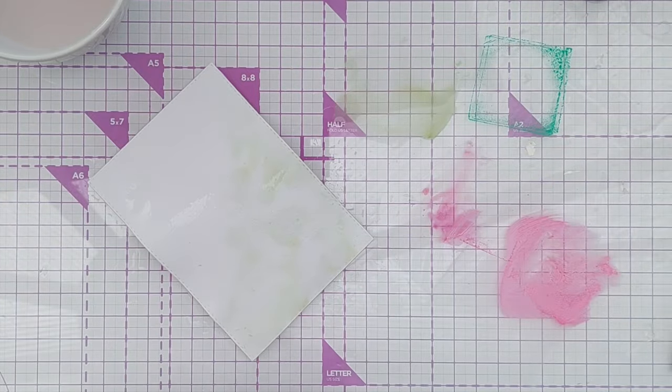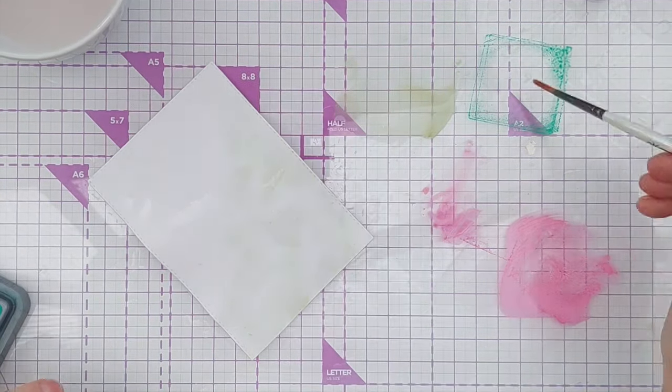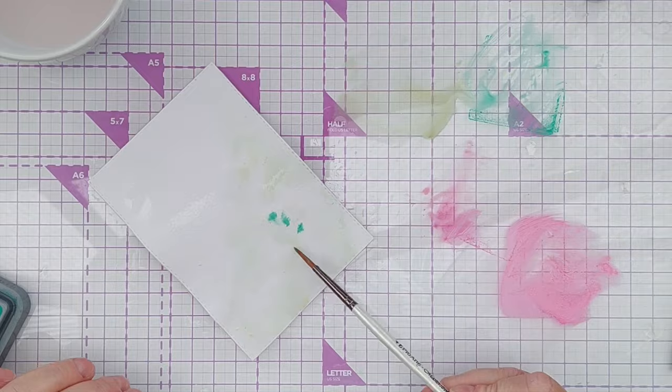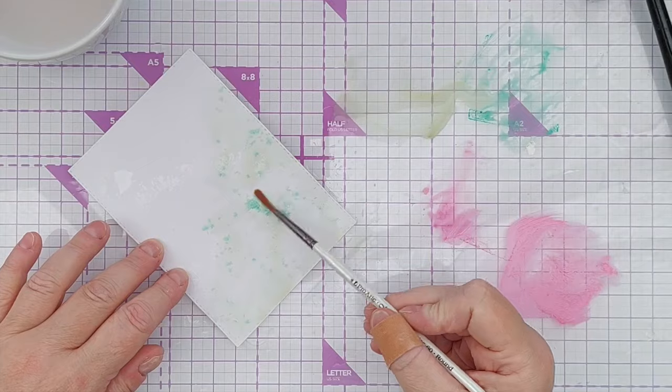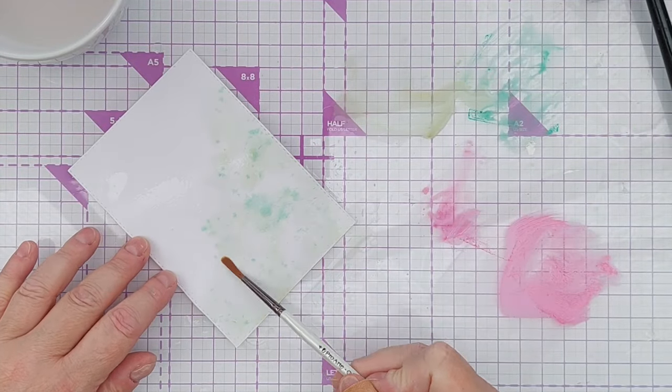And then I added some Bundled Sage and some Lucky Clover or whatever the dark green was that I used, and I just kind of blotched it on so that it would spread out in all that water and create a lovely diffuse background.